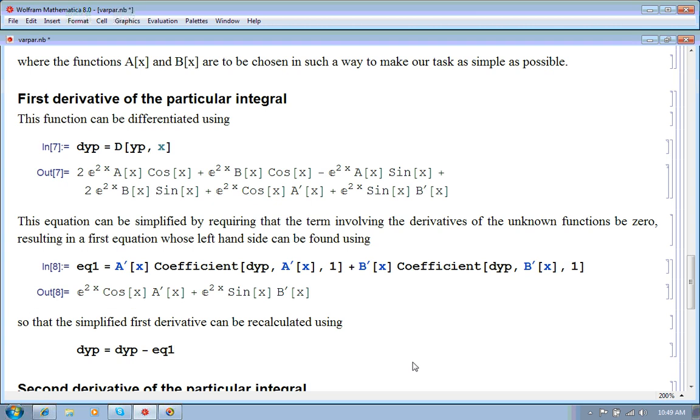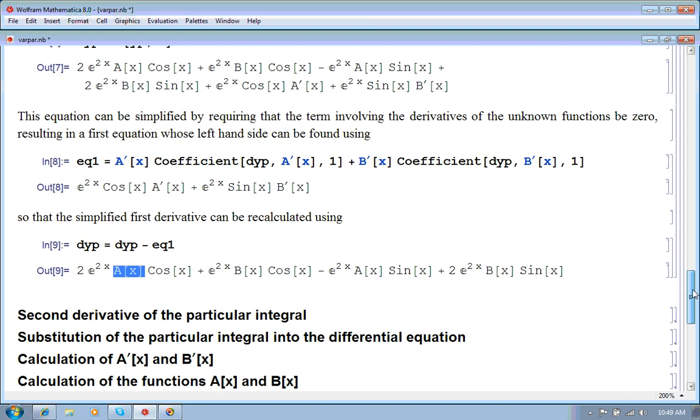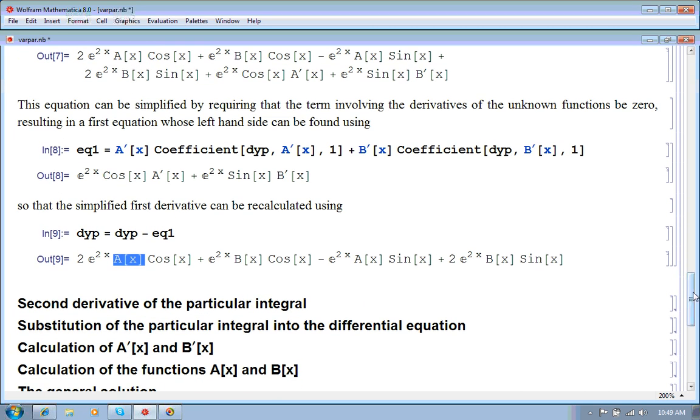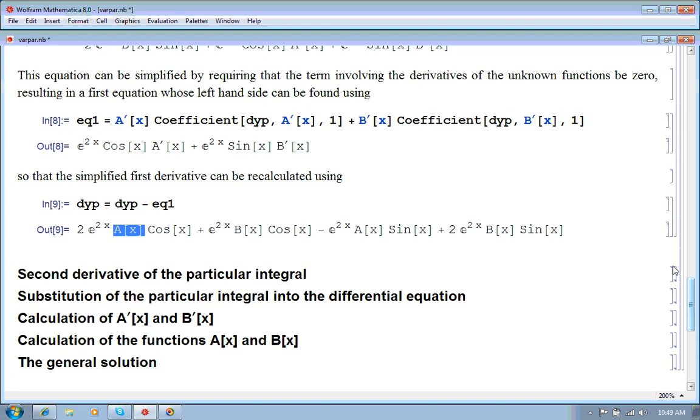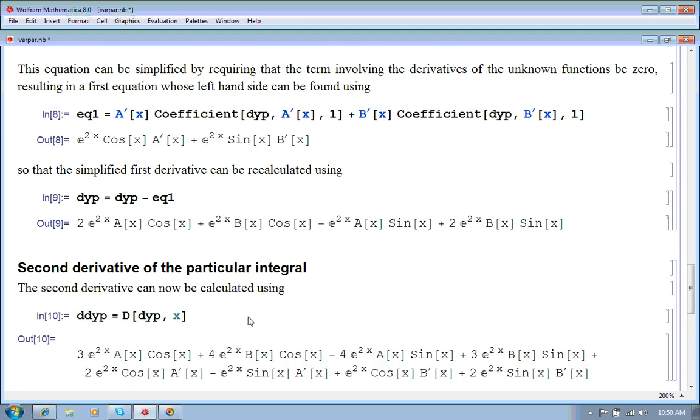And now we have to subtract that off our derivative because that's the... And we get this simple expression here which involves only the functions A of x and B of x. Okay. Now, we calculate the second derivative. So, we differentiate that. The first derivative with respect to x and we get this expression here.